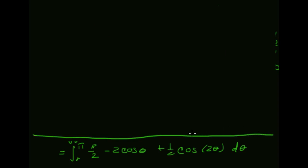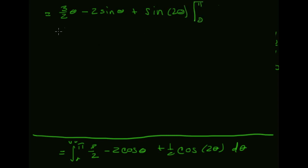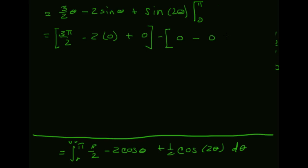Integrating gives three halves theta minus two sine theta plus sine of two theta, evaluated from zero to pi. At pi, I get three pi over two minus two times sine of pi (which is zero) plus sine of two pi (also zero), minus zero minus zero. This simply works out to be three pi over two, which is answer C.